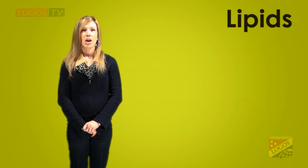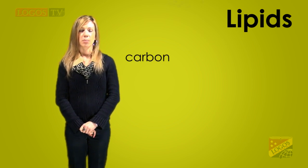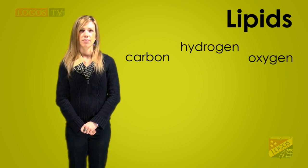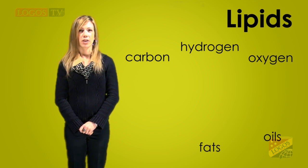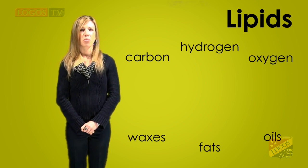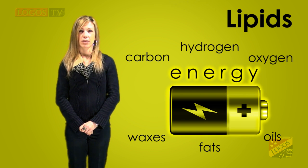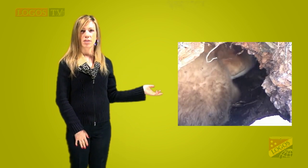Lipids are energy-rich organic compounds made of carbon, hydrogen, and oxygen. Examples include fats, oils, and waxes. Lipids contain more energy than carbohydrates, so cells store energy in lipids for later use. This hibernating bear is able to live on the energy stored in fat within his cells.